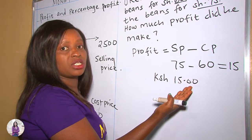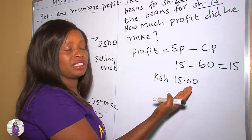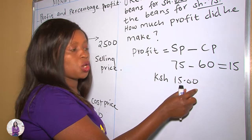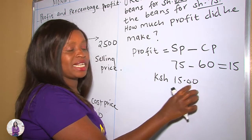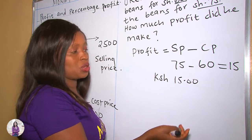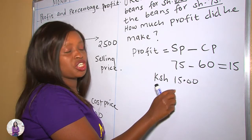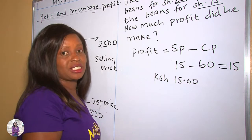The zeros after 15 represent that we don't have any cents — our cents are zero. That's why we put them there. So this means a profit of 15 shillings.